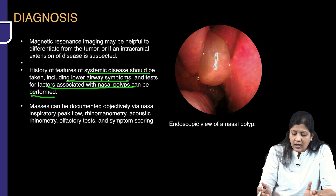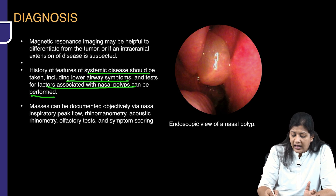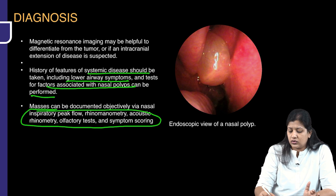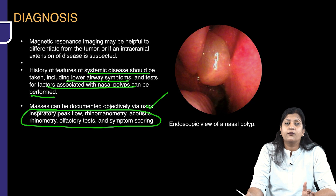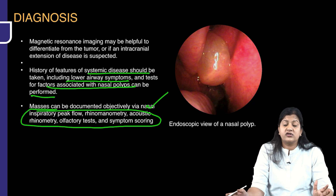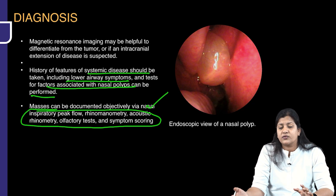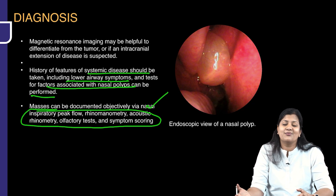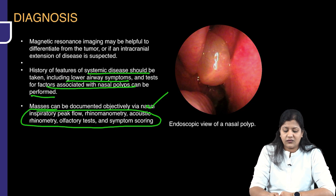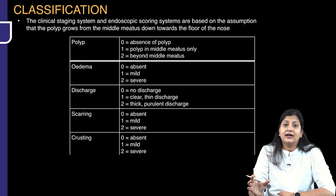You will have to objectively measure the airflow rate by doing rhinomanometry, acoustic rhinometry, and olfactory testing. These objective tests are very important because you need data pre- and post-surgery — how much was the airflow of the nose before surgery and how much improvement has occurred after. You need to keep objective evidence for that.